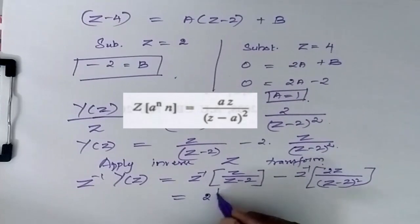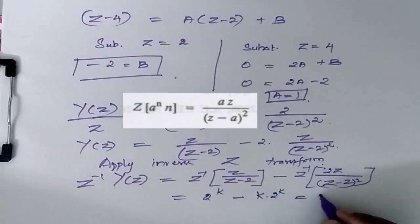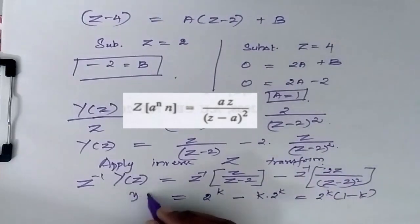So now I will be having this is equal to 2 power K. This is equal to minus K into 2 power K. So this is 2 power K into 1 minus K. This is my Y of K.